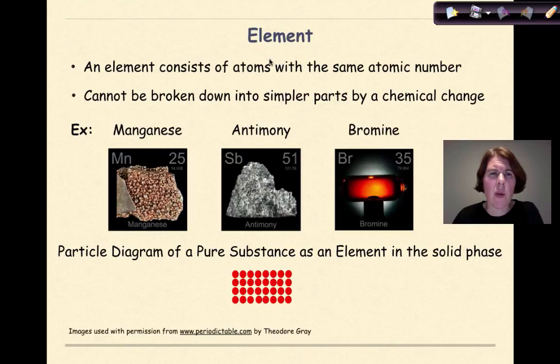So let's review the definition of an element. An element consists of atoms with the same atomic number. Now if you remember from atomic structure, atomic number will always equal the number of protons. And as long as the number of protons in the nucleus remains the same from atom to atom, you'll have that particular element. Elements cannot be broken down into simpler parts by a chemical change.